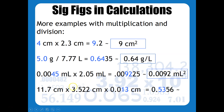And then finally we've got three things we're multiplying here. This has three sig figs, this has four, and this one — remember, that's a leading zero — has two. So therefore the answer can only have two sig figs, and it should be 0.54 centimeters cubed.